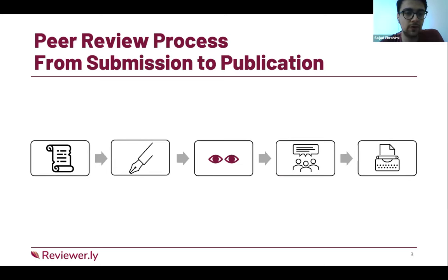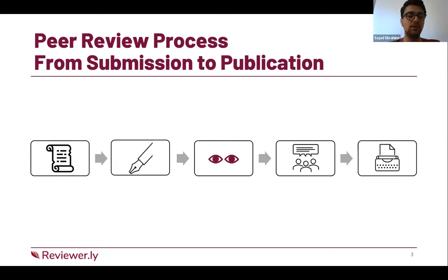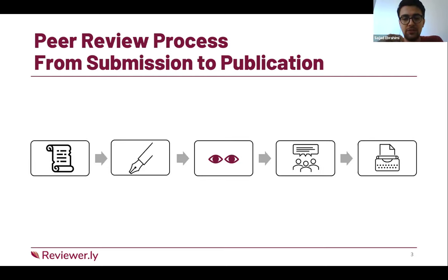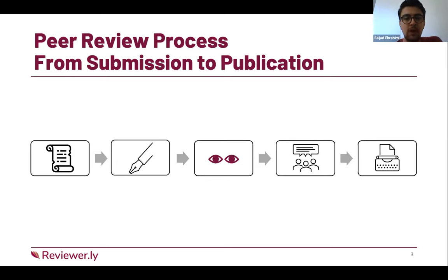Let's take a look at the peer review process from submission to publication. If you want to publish a paper in a conference or journal, the first step is to submit it in a system. Then the system assigns some reviewers to read and review your paper, leave comments, and discuss it with the SPC to make a final decision on whether your paper is rejected or accepted.